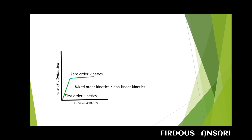Mixed order kinetics has features of both first order and zero order kinetics. In first order kinetics, as concentration increases, the rate of elimination increases in a linear fashion. In zero order kinetics, at higher concentrations, increasing concentration does not increase the rate of elimination. In mixed order kinetics, as you increase the concentration, the rate of elimination may or may not increase — we cannot predict the result exactly. This is also known as nonlinear kinetics.